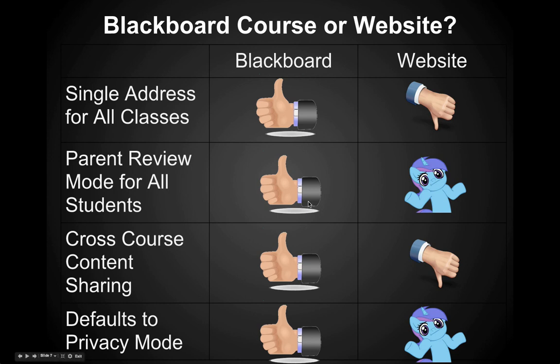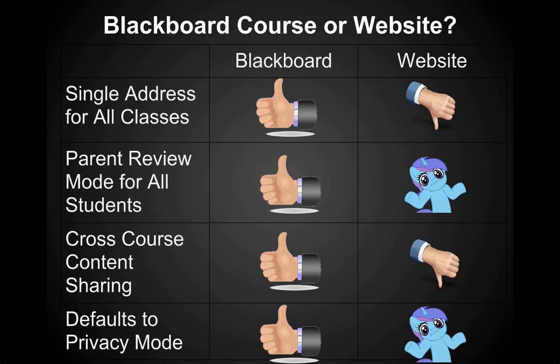The address is http://bb9.waukesha.k12.wi.us — don't write that down, I'll put it on the screen in a moment. The next advantage is parent review mode for all students. In Blackboard, when a student is enrolled, their parents or guardians are also enrolled. If the parents are interested and the teacher has the proper permissions turned on, parents can look at what's going on in the course and view the resources. When they want to view another child at another school — provided that teacher is using Blackboard — with a click of a button, without even logging out, they can be viewing that child's course as well.